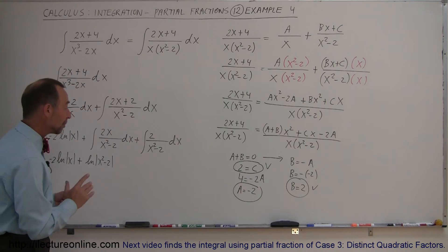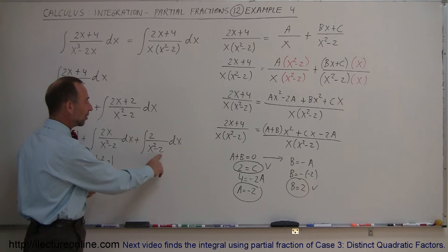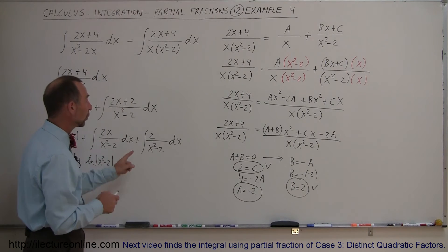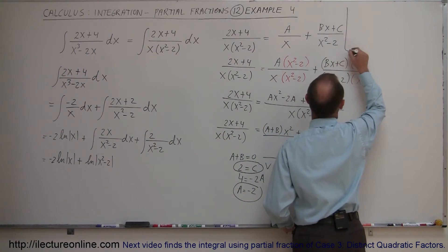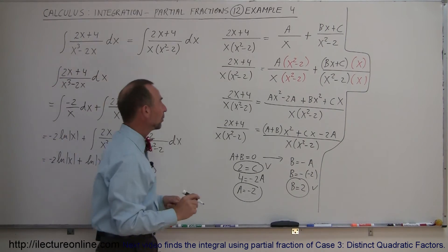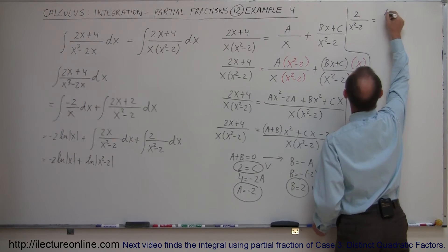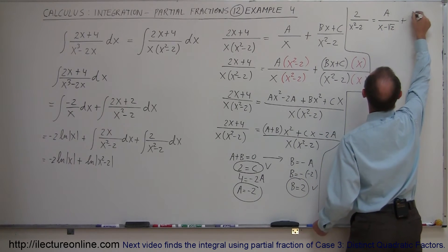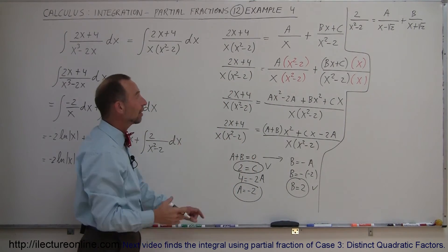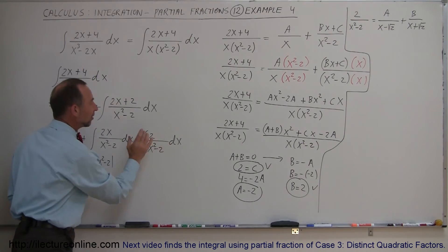For the remaining integral of 2 over x squared minus 2, we apply the partial fractions technique again. We can write x squared minus 2 as a difference of two squares — thinking of it as x minus root 2 times x plus root 2. So 2 divided by x squared minus 2 can be written as a over x minus root 2, plus b over x plus root 2, where a and b are a new set of constants to find.